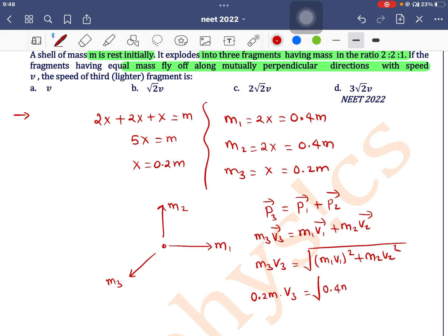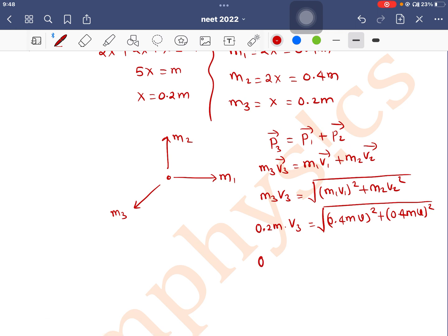So 0.2m·v₃ = √[(0.4m·v)² + (0.4m·v)²]. 0.2m·v₃ = √[2 × (0.4m·v)²].